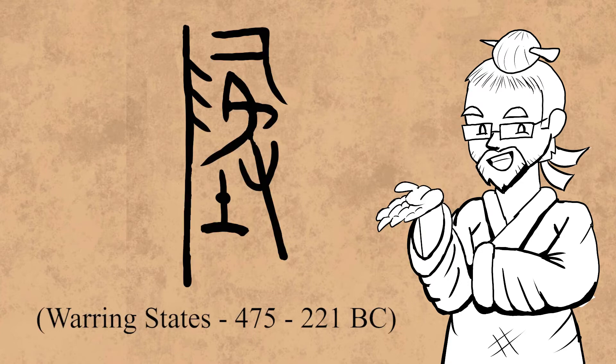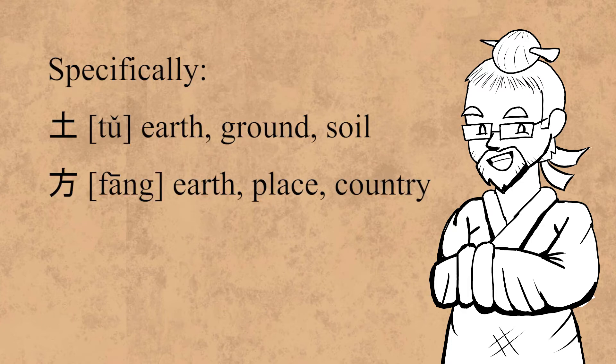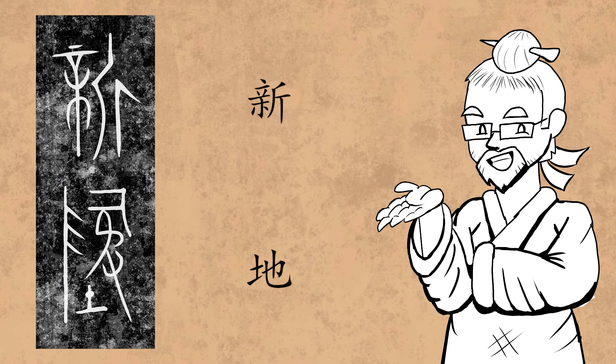Now that we've established a baseline to build off, let's do some etymology. The earliest use of 地 that we have found so far is from the Warring States period. Before this period, the common way to refer to earth seems to have been either 土 or 方. I'll go into these characters further in a separate video. On the bronze ware known as the King of Zhongshan's Round Kettle, we can read the words 新地, new territories.